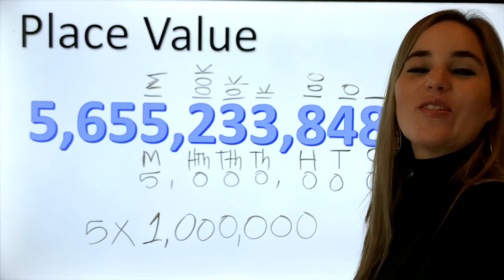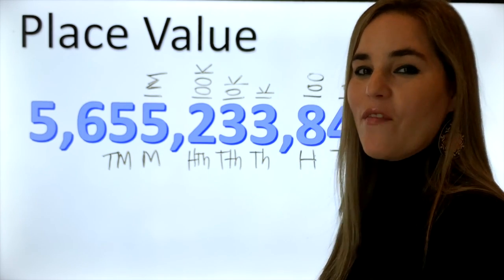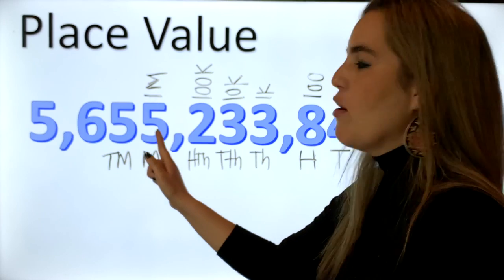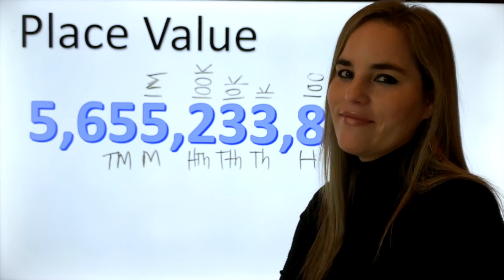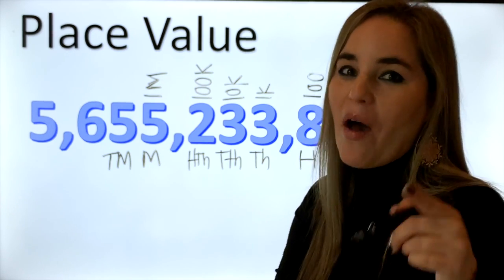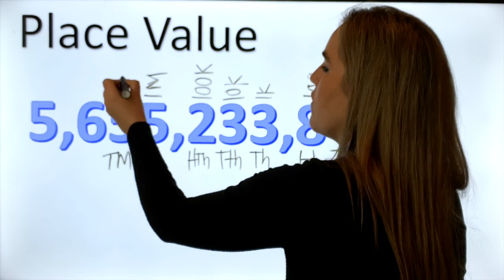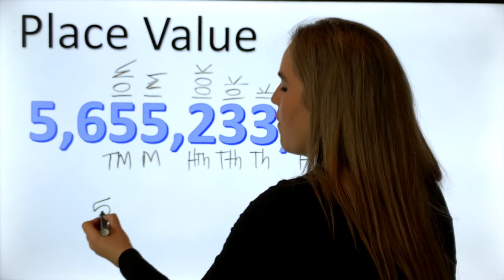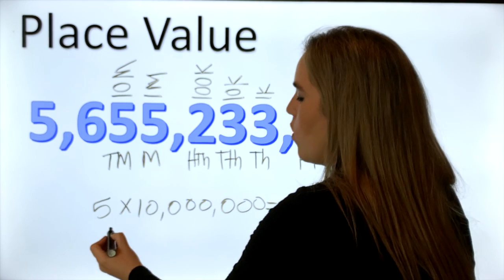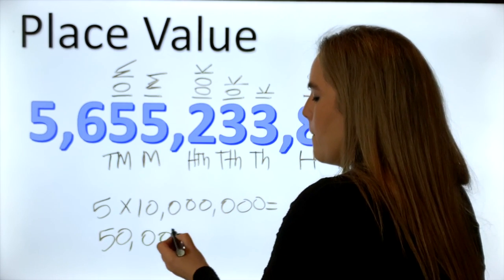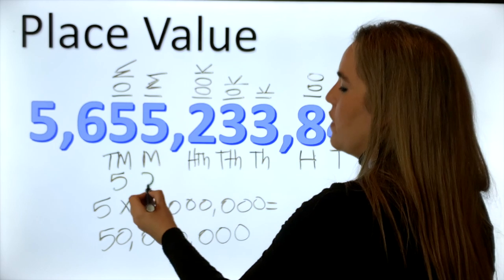Now let's go to the ten millions place. We also have a five here — five, five, five, and five. Do you remember, are these fives the same value? I hope you know by now that they are not. The value of the first five is five million, and the value of this five in the ten millions place means five groups of ten million, which equals fifty million. Remember, you just drop the digit five and fill the rest with zeros.